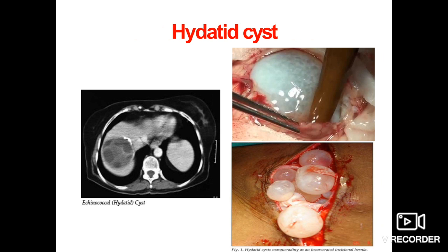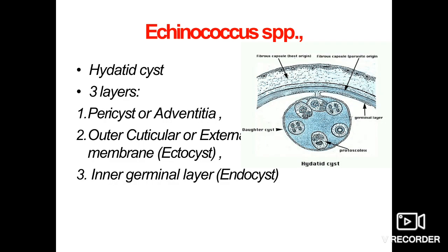Here you can see two different diagrams of hydatid cyst: the left one is a radiological diagram and the right one is the actual diagram of hydatid cyst at the time of surgical removal. The embryo released from an egg develops into a hydatid cyst, which grows to about 5 to 10 cm within the first year and is able to survive within organs for years. The cyst contains outer and inner membranes; the inner germinal layer is called the endocyst and the outer one is the ectocyst.